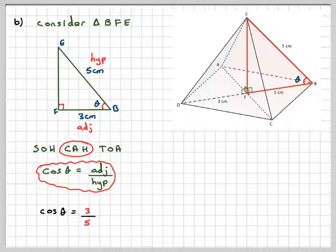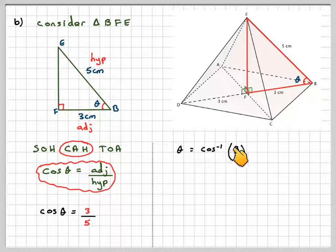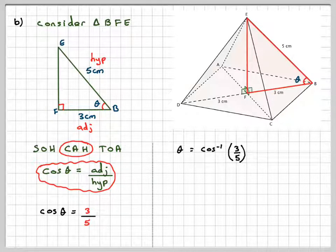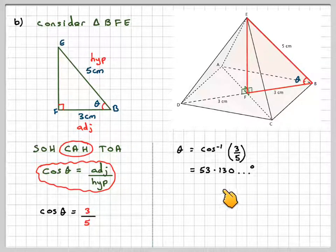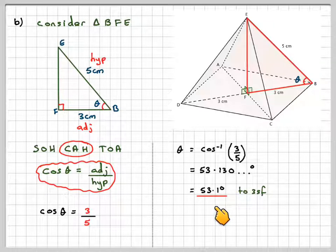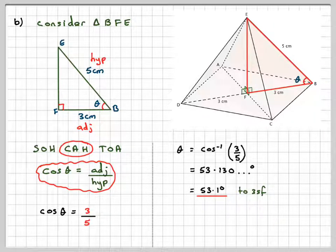In order to find the angle theta, we need to do cos to the minus 1 of 3 over 5. Make sure your calculator is in degree mode and then you'll get an answer of 53.13 degrees and then a final answer of 53.1 degrees to three significant figures.